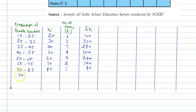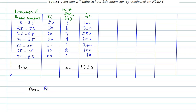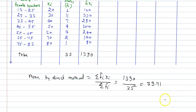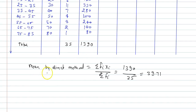Taking the totals: ΣFi = 35 and ΣFiXi = 1390. By the direct method, mean = ΣFiXi / ΣFi = 1390 / 35 = 39.71. This is the mean by the direct method.